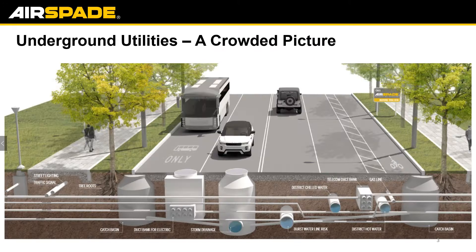This is a great example of the underground landscape today — very, very crowded. Everything between water, telecommunications, and electrical infrastructure makes it very difficult to use any traditional excavation means such as an excavator or a backhoe. The Air Spade is going to be a great alternative to help minimize any damages.